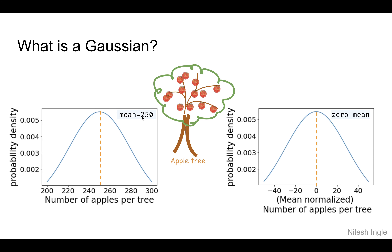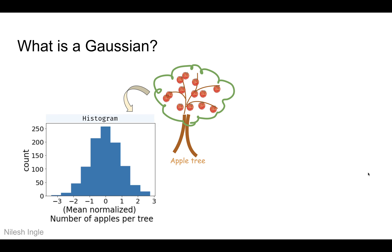We can zero-mean this data by subtracting the mean of 250 from the readings, giving the plot on the right-hand side. The probability density is the same, but the x-axis values are now centered at zero. This is an example of a normal distribution or Gaussian distribution.